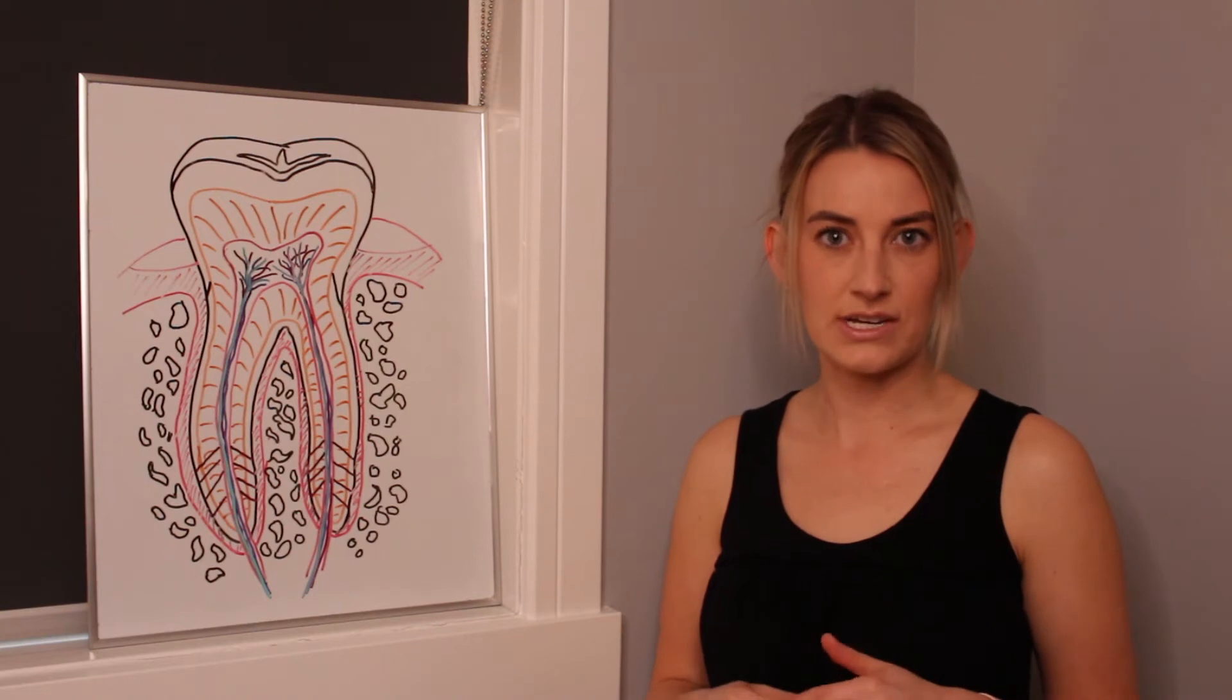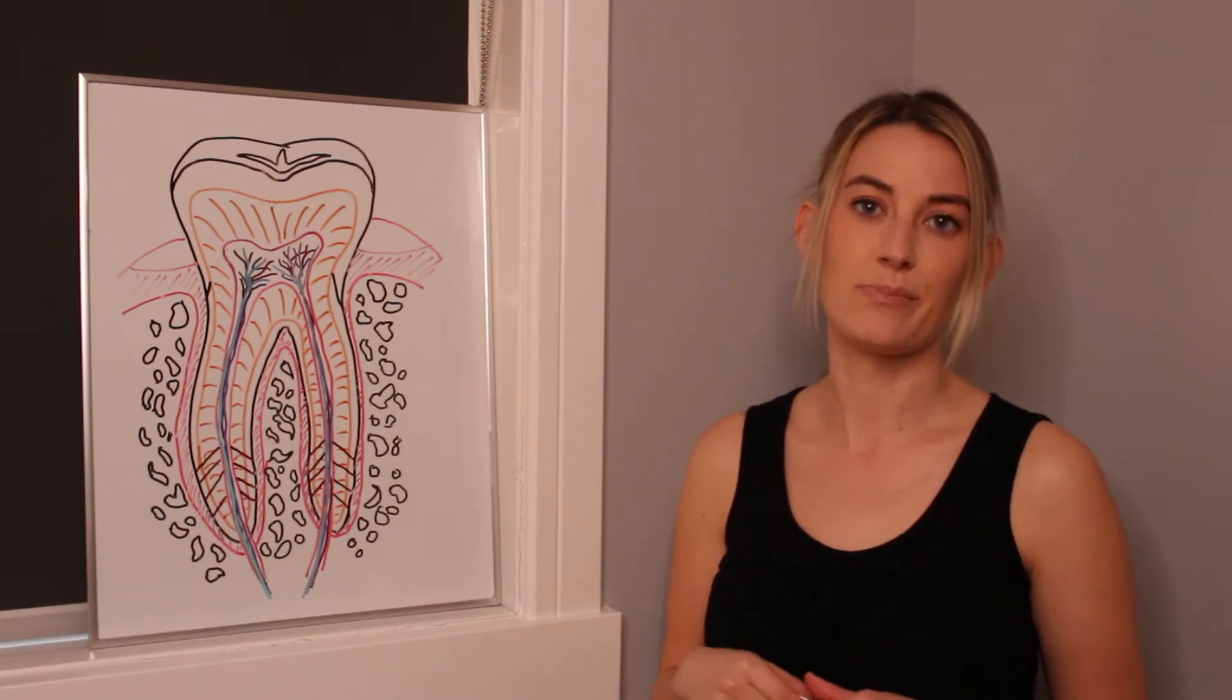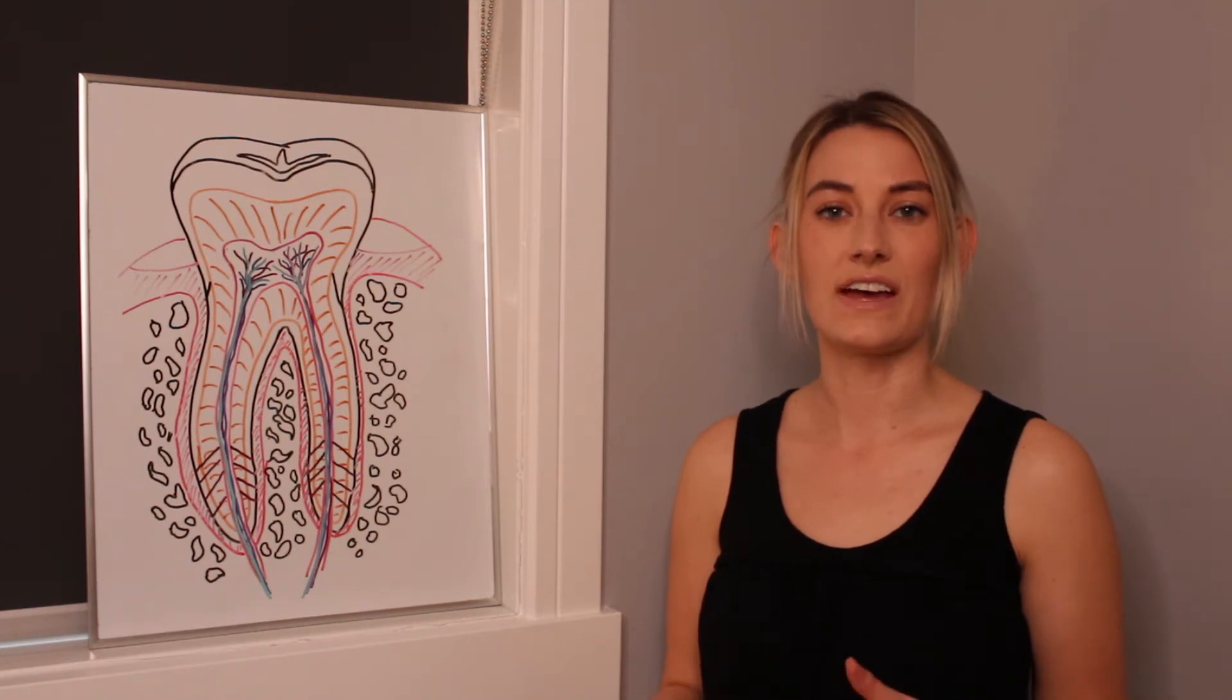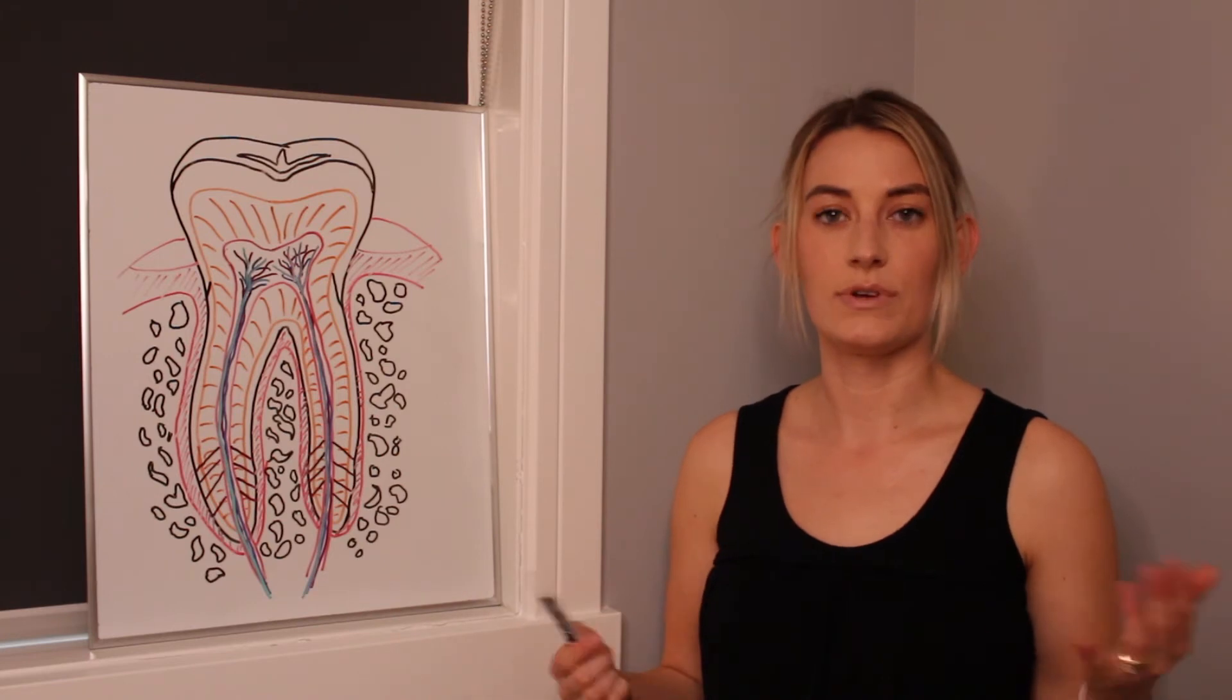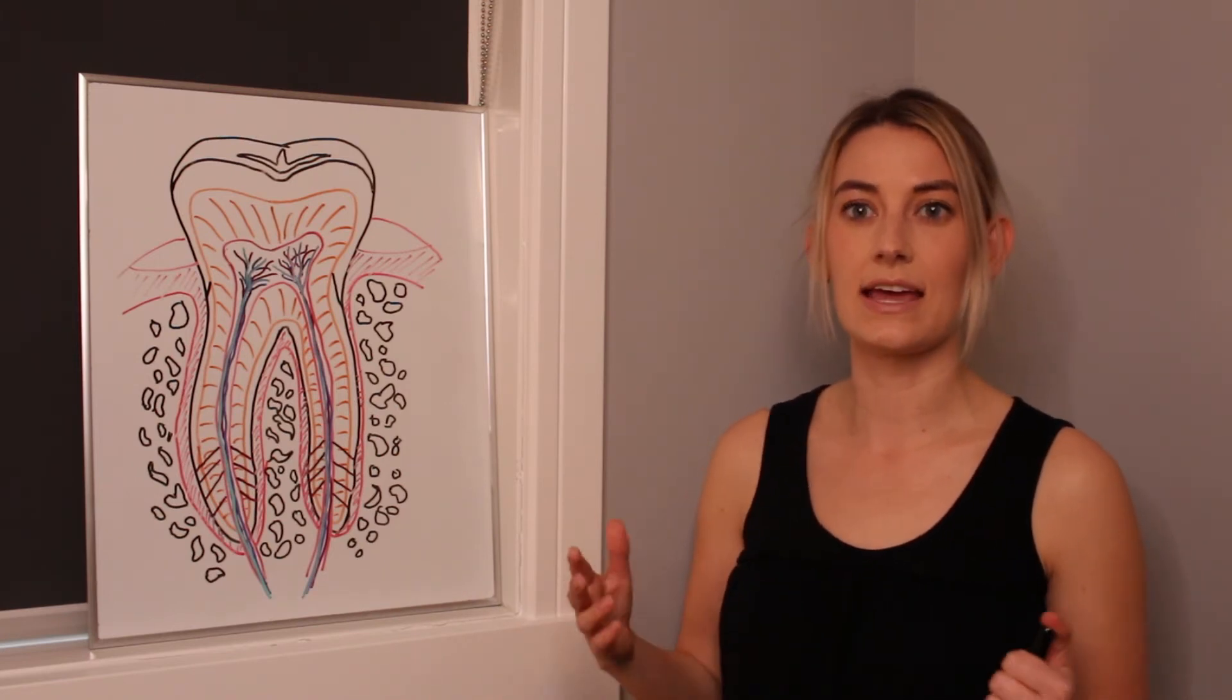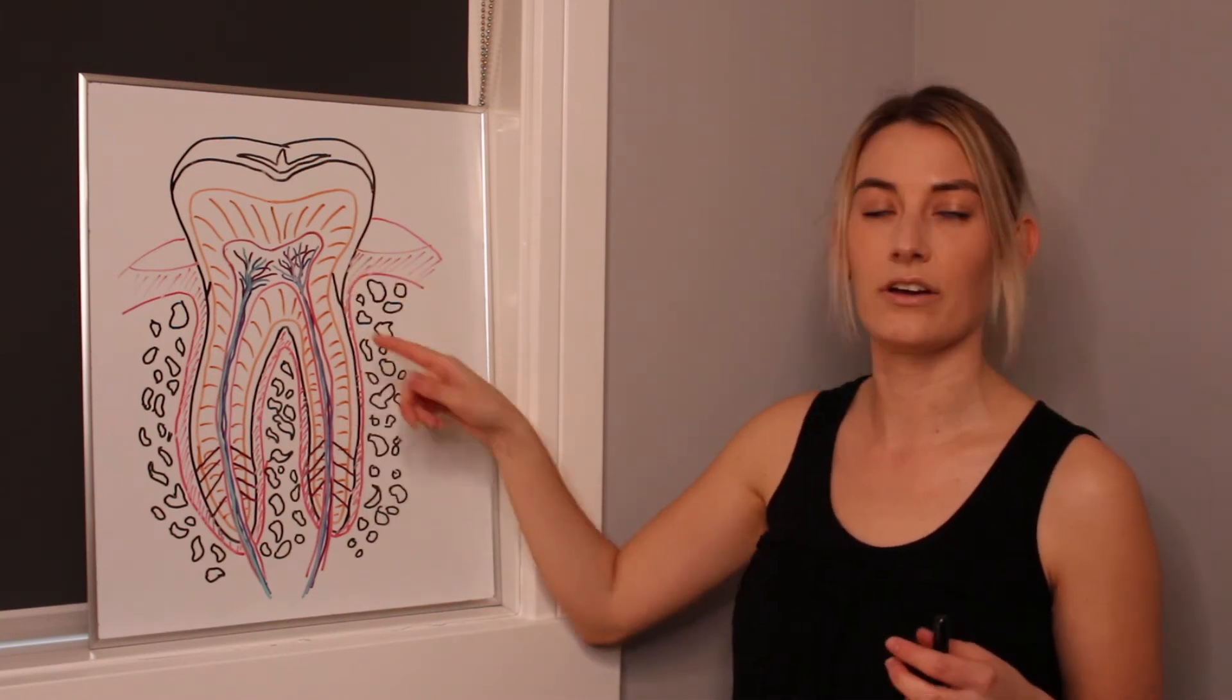You can also have something called tertiary dentin, which is developed in response to trauma. So sometimes if we've had trauma to the tooth, whether it's an infection, whether it's caries, whether it's physical trauma to it, we can sometimes get something called tertiary dentin that can be deposited. Again, it's still dentin, it's in this middle layer.